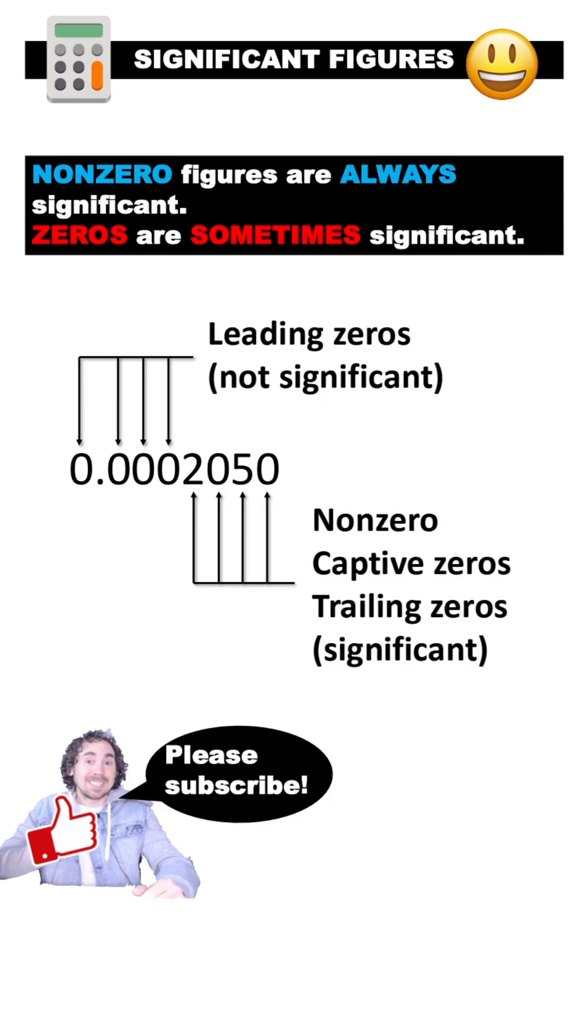Sometimes digits are not significant figures because they're not adding value to the measurement. The only digits that might not be significant are zeros.